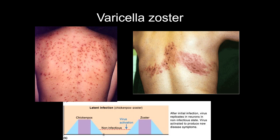Varicella zoster is the virus that causes chicken pox — a latent infection that infects satellite cells of sensory ganglia. The first time around you get an itchy rash with flu-like symptoms. When it comes back later in life, usually in your 50s or 60s, it comes back as shingles — not an itchy rash, but an intense burning sensation. People who've had it describe it as feeling like a portion of your body is on fire 24/7. There is a vaccine for this.